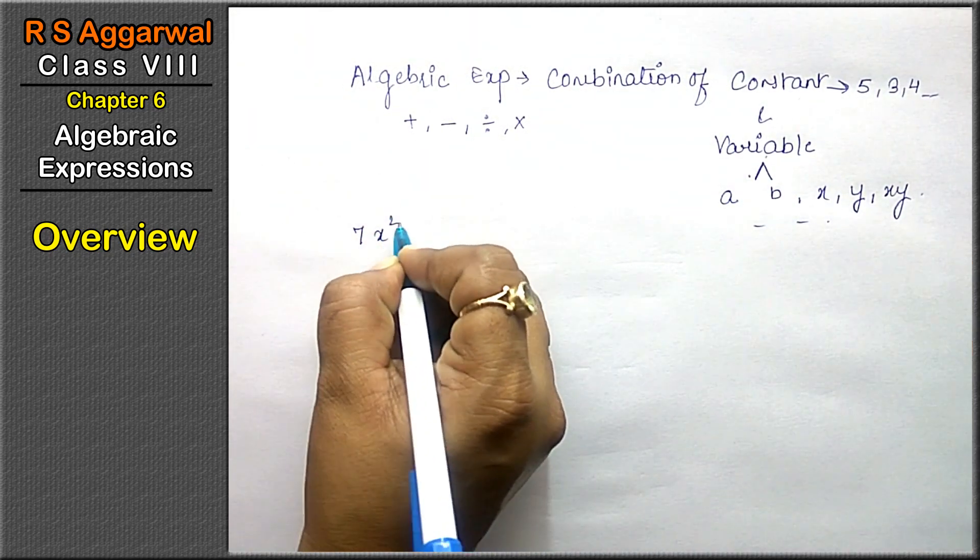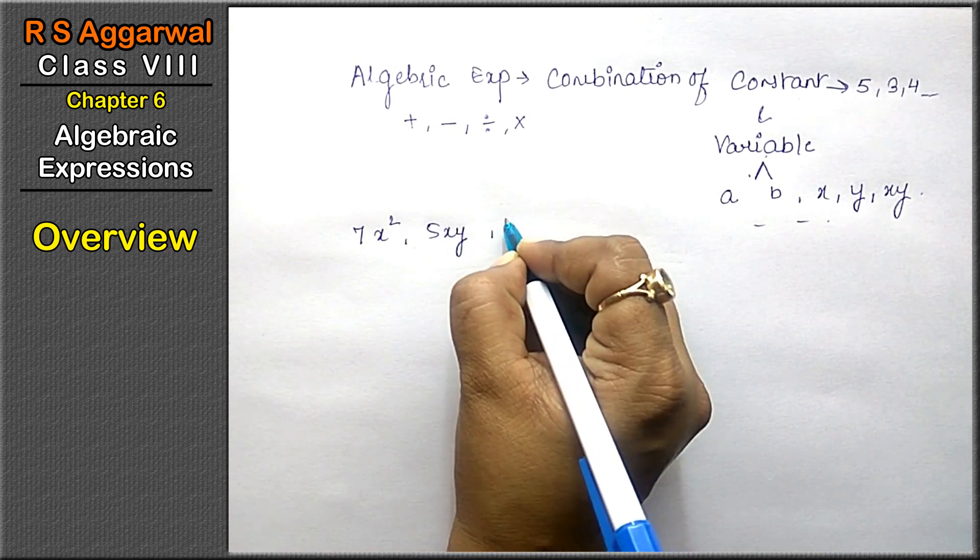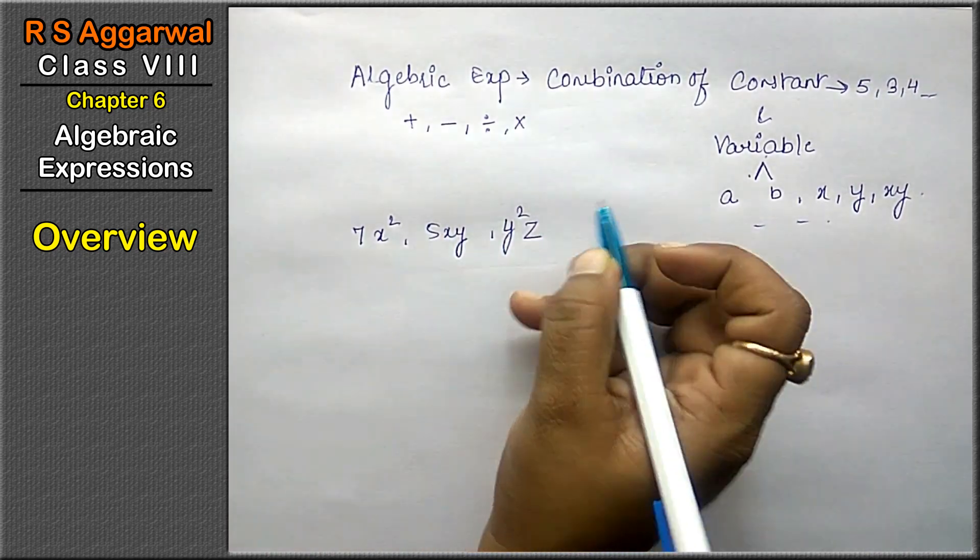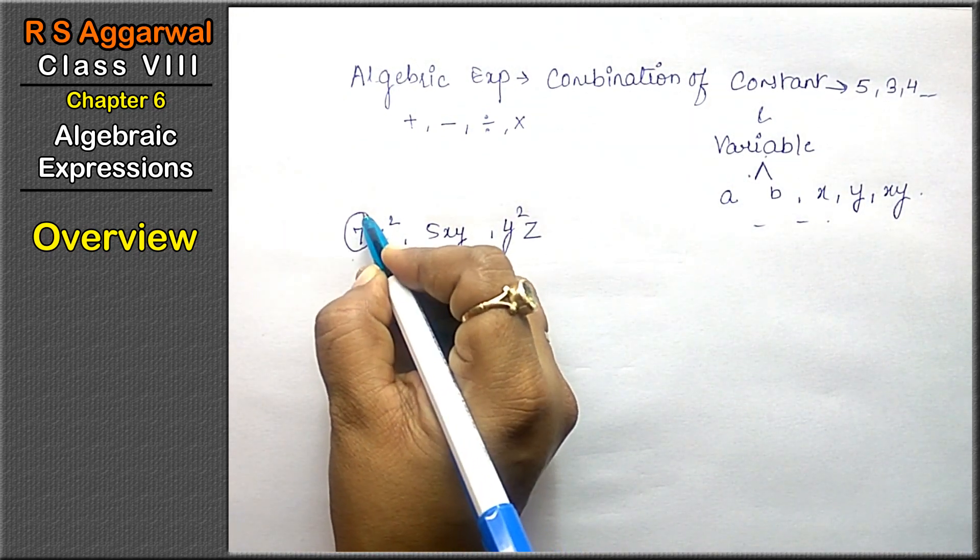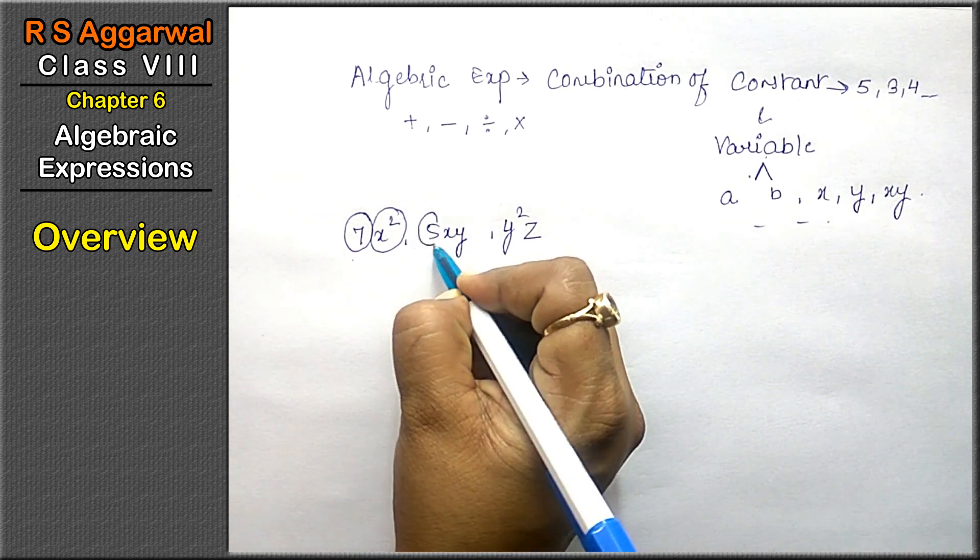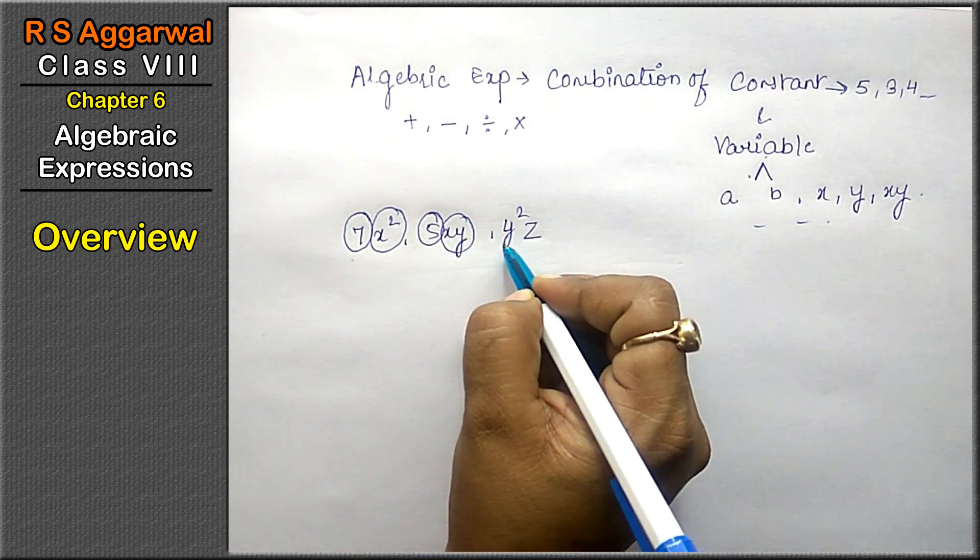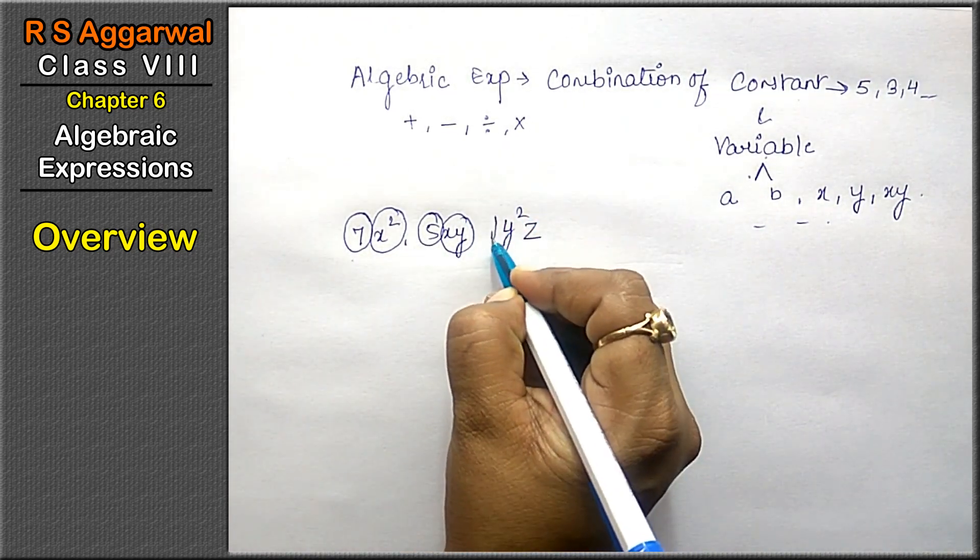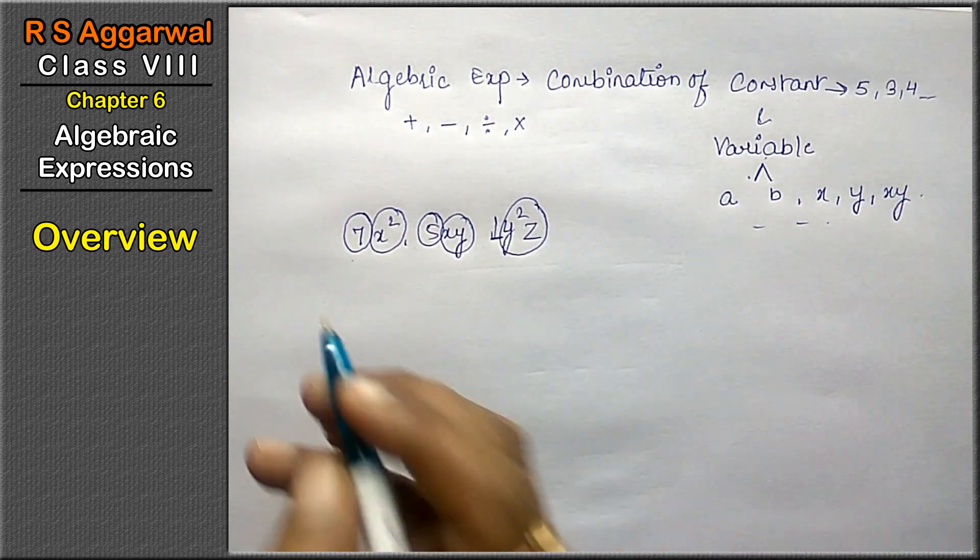For example, 7x², 5xy, y²z. In these terms, 7 is a constant and x² is a variable. In this expression, 5 is a constant, xy is the variable. In this, there is no constant, that means 1 is a constant and y²z is a variable.